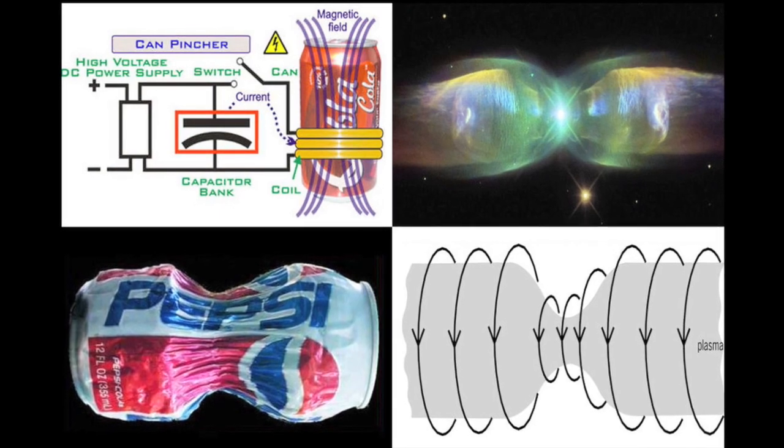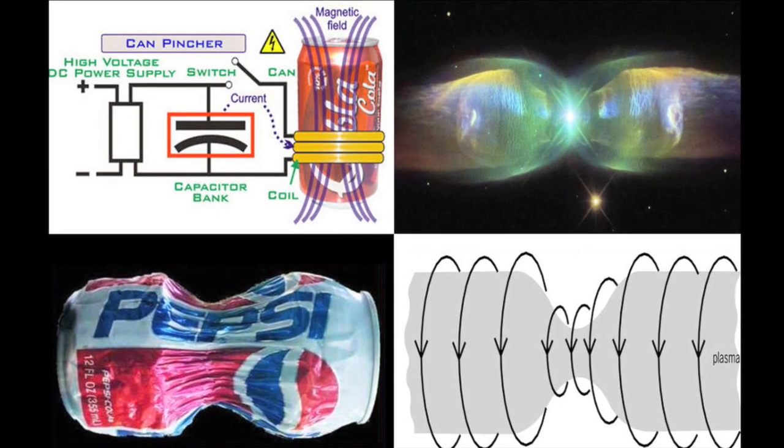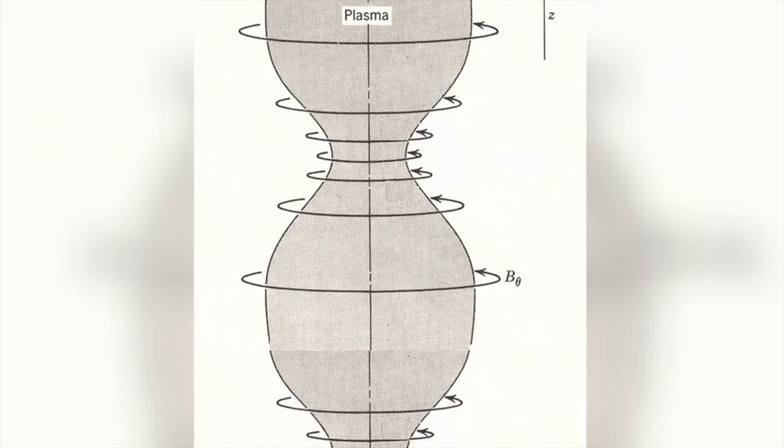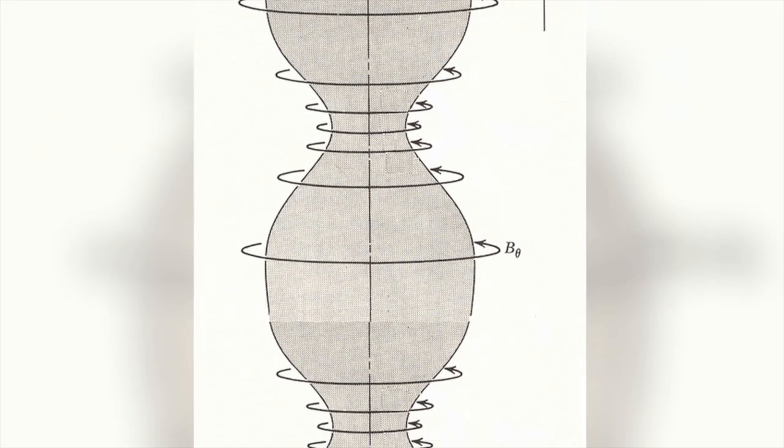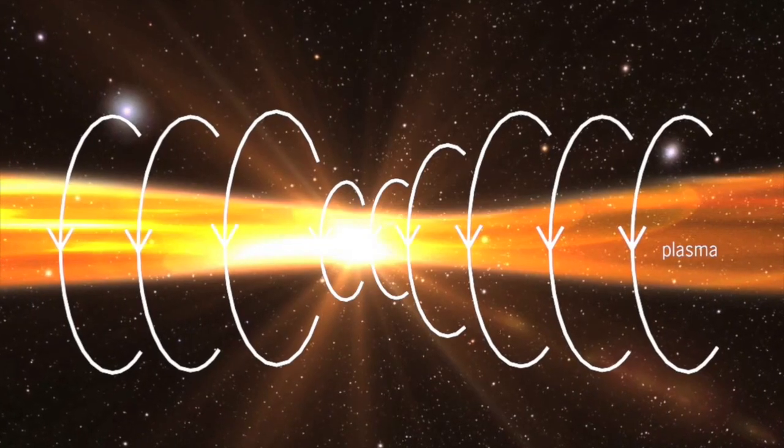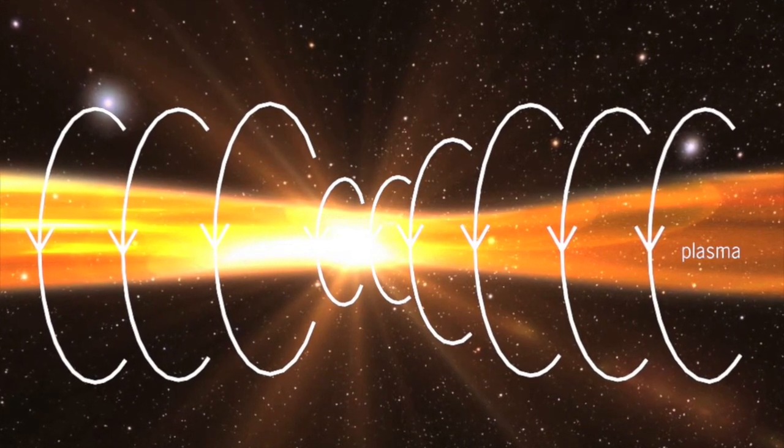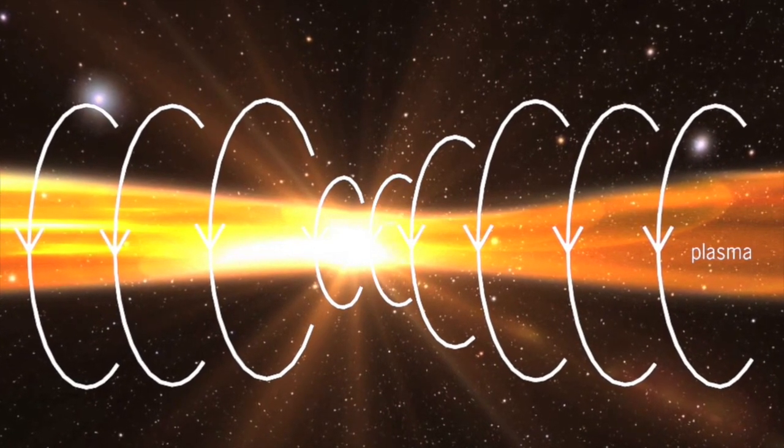Electromagnetism pinches the dust and plasma into heated blobs of matter called plasmoids. As the electric field intensifies, it increases the pinch effect, forming spinning electrical discharges. At first, they glow dimly red, then blaze yellow, and finally they might become brilliant ultraviolet arcs called stars.